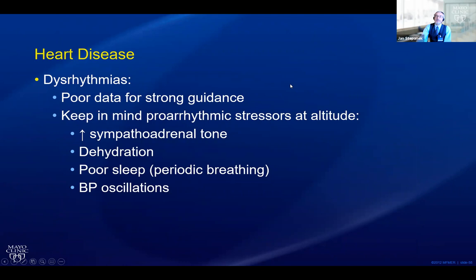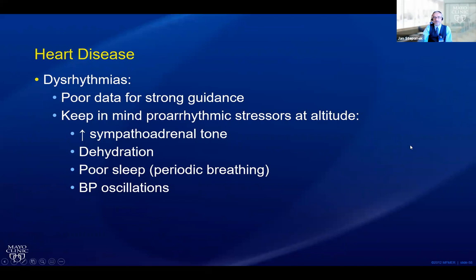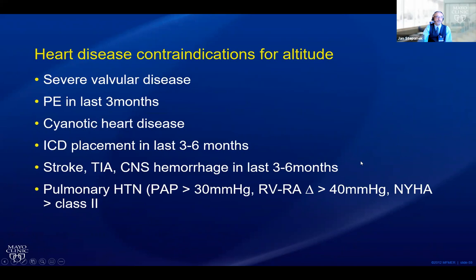With cardiac arrhythmias, unfortunately not all domains have good data. Going into an environment where sympathoadrenal tone increases would be arrhythmogenic. Dehydration, poor sleep, and blood pressure oscillations are all factors. It's not that they can't go, but you want to make sure these people understand how severe their arrhythmia is. Is this a rare, barely symptomatic supraventricular tachyarrhythmia? Or is this someone with an AICD, decreased EF, and episodes of ventricular tachycardia? That's a very different discussion.